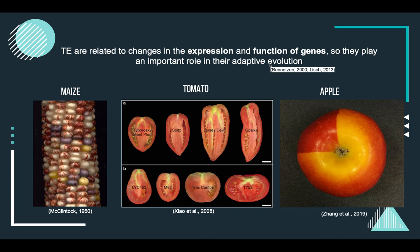Here we have some examples: the change of color in maize kernels, the change of size in tomato, and the change of color in apple — all of them as a result of a transposable element insertion.